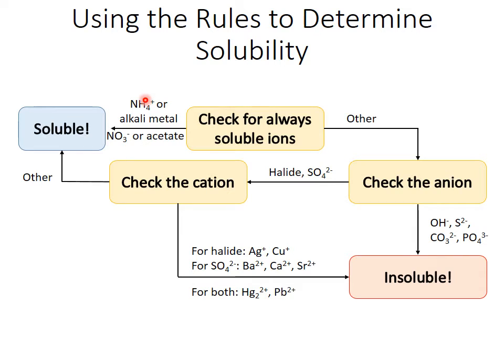These are ammonium or alkali metal cations, or nitrate or acetate anions. Again, if any of those are present, you have a soluble compound.